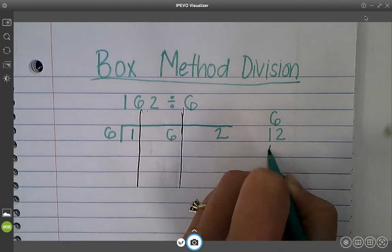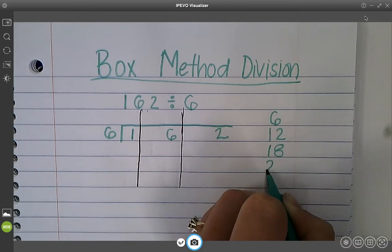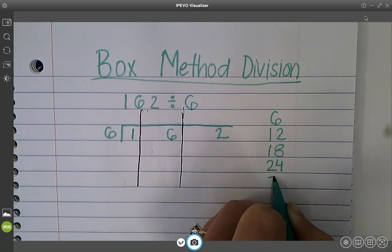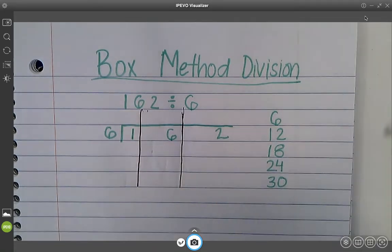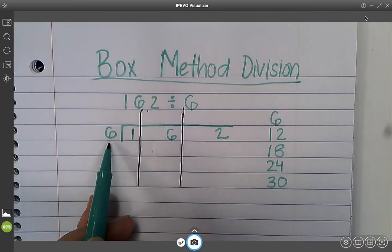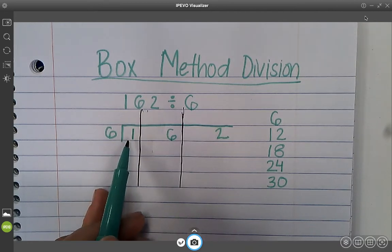6, 12, 18, 24, and 30. All right, so we have to get as close as we can to these numbers without going over.